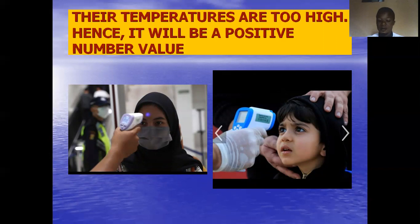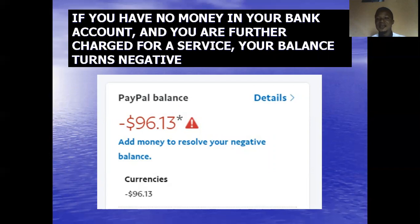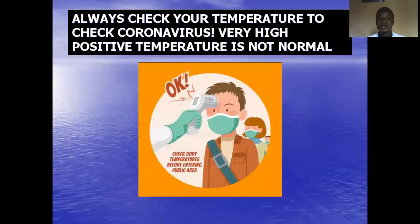When you have no money in your bank account and you are underserved by the bank, you will see that your bank account balance tends to be negative. As you can see in this picture I have shown here, the balance of this person is negative $96.13. Sometimes if you are infected with coronavirus, as I said earlier, your temperature will be very high. This leads us into a very nice topic in mathematics known as directed numbers.